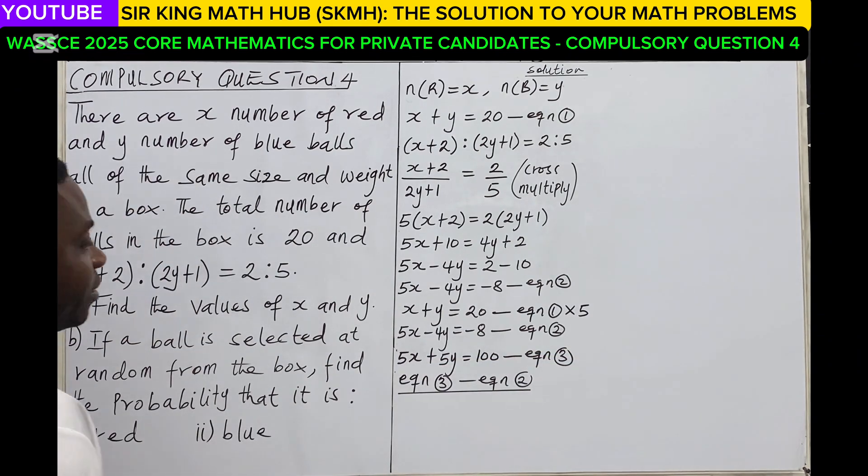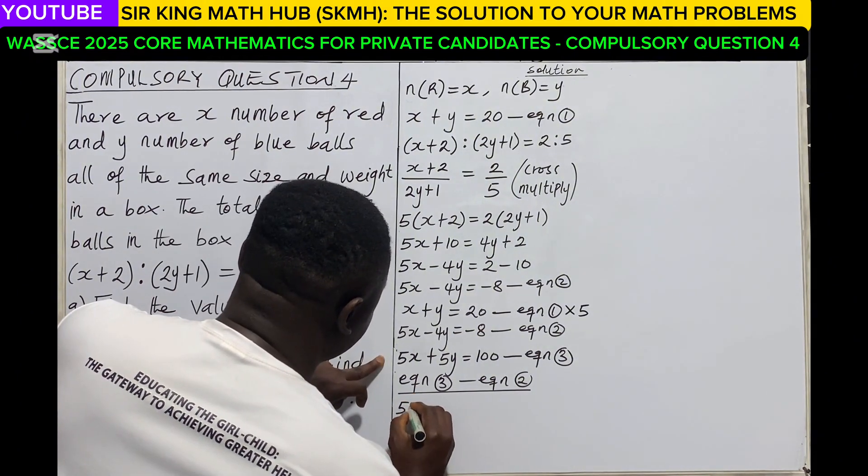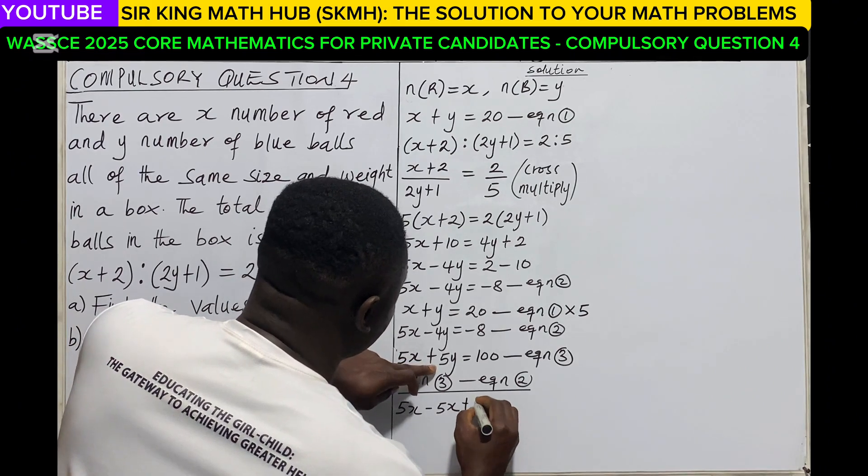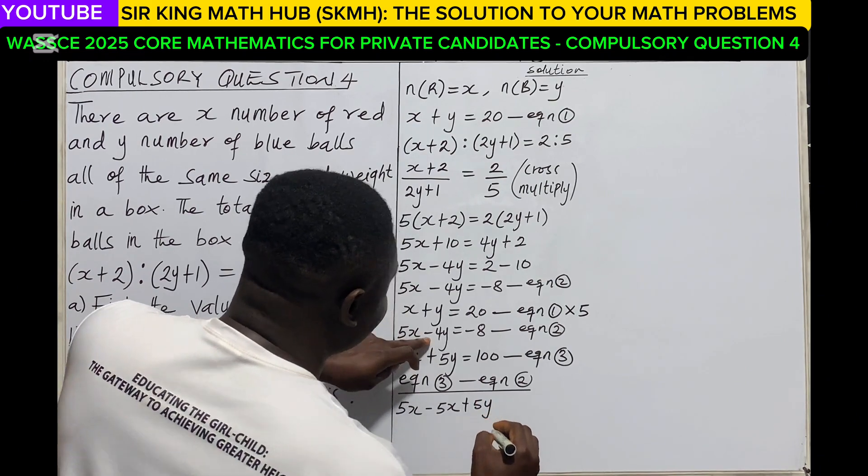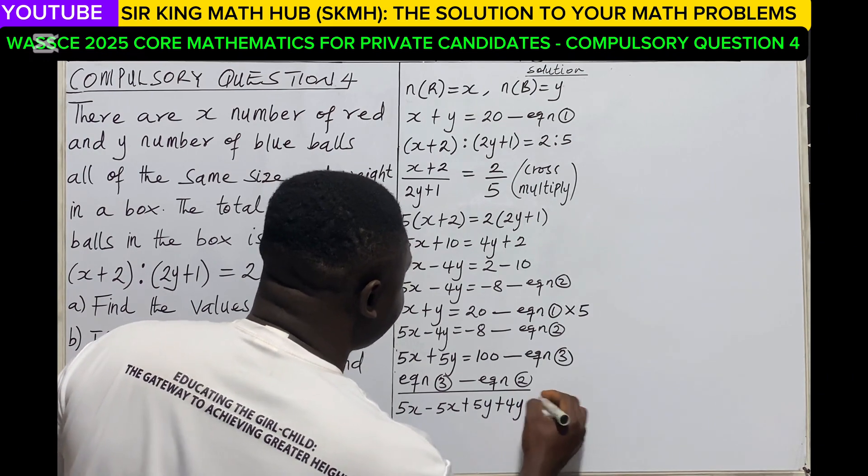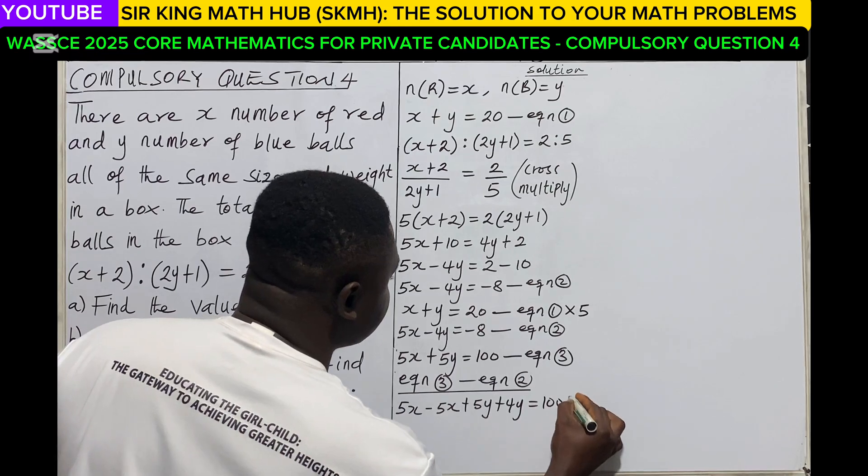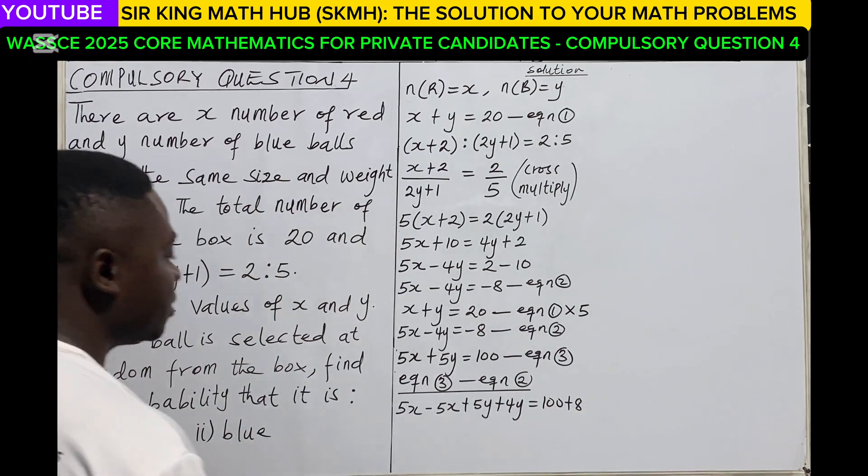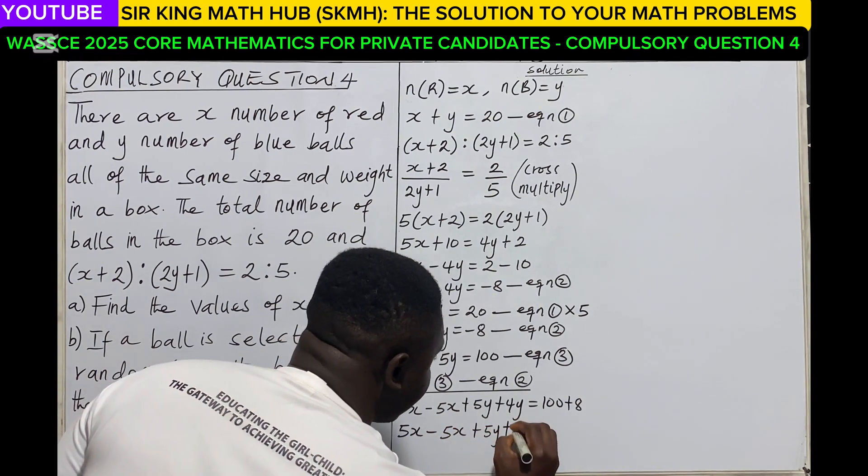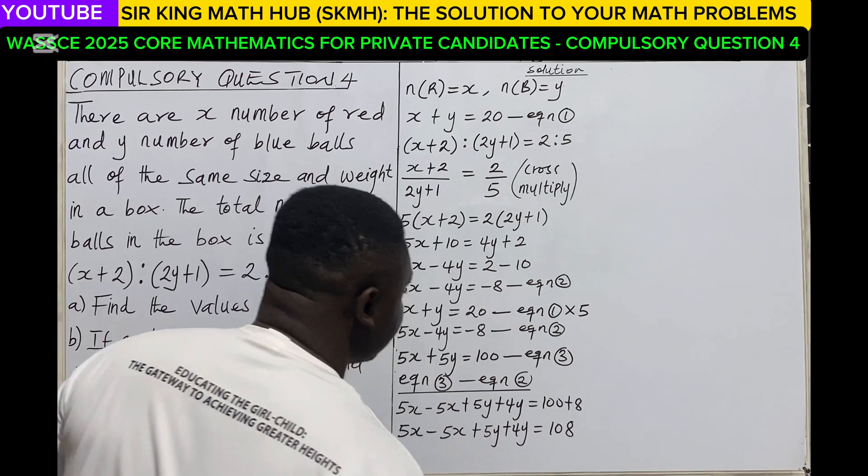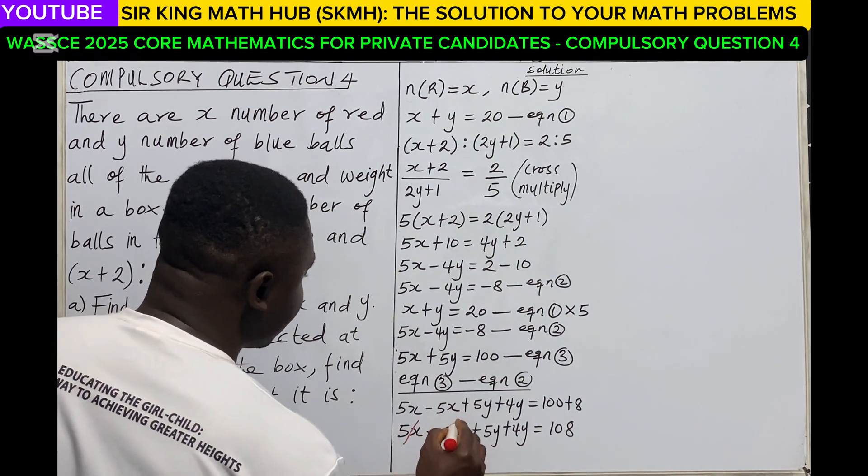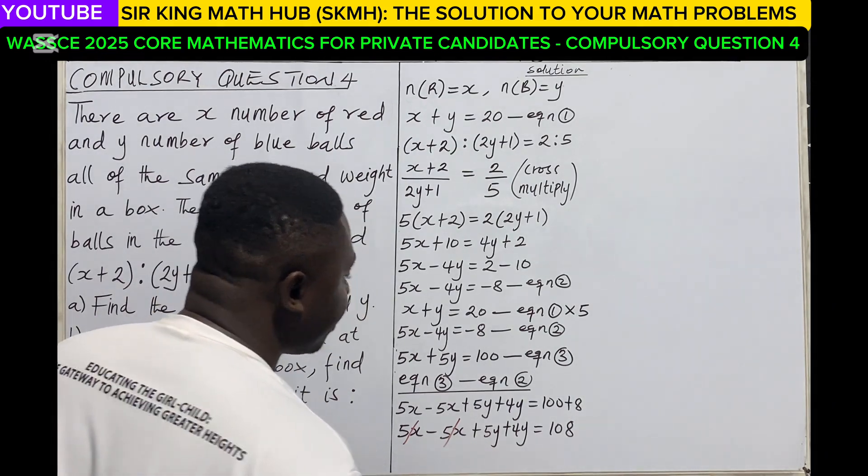So in equation 3, starting with the x variables, we have 5x minus 5x, then the y variables plus 5y minus negative 4y, so that becomes plus 4y. This must be equal to 100 minus negative 8.